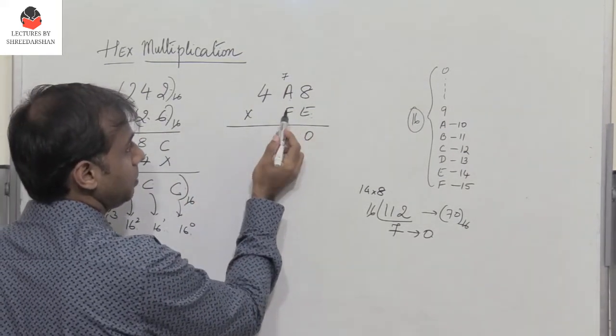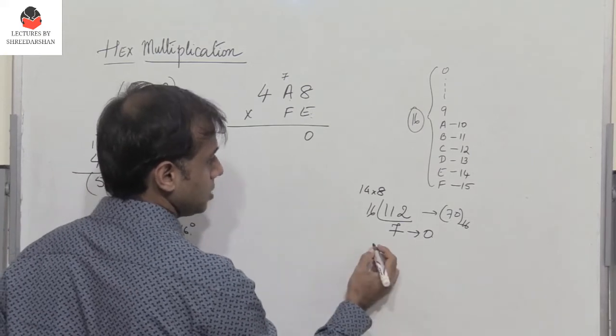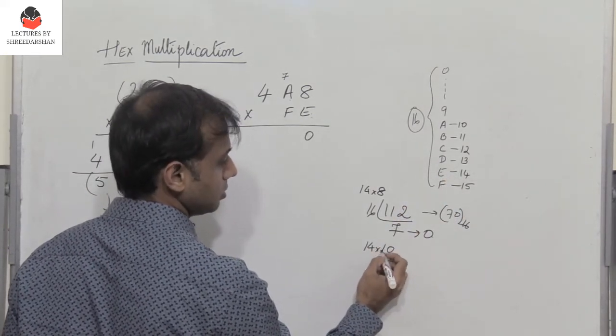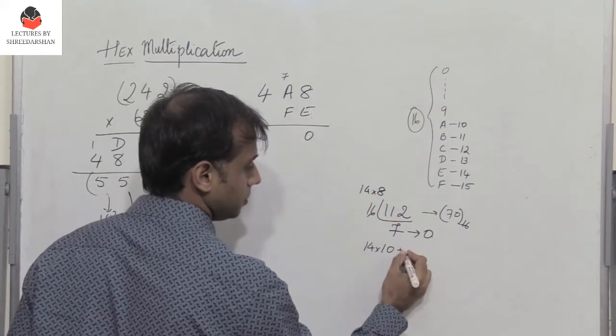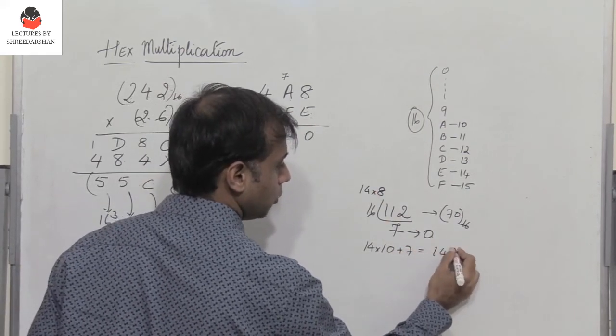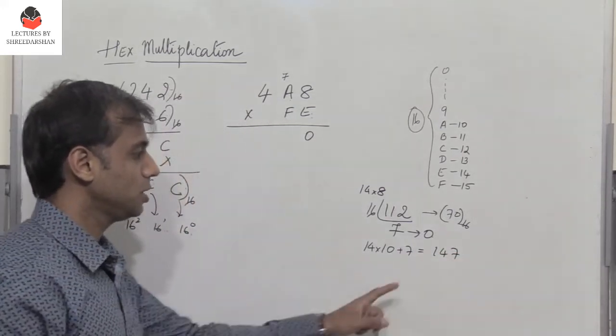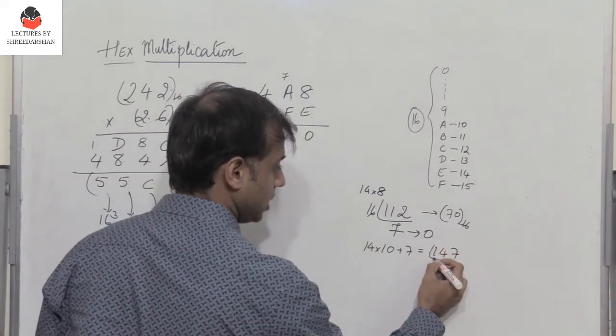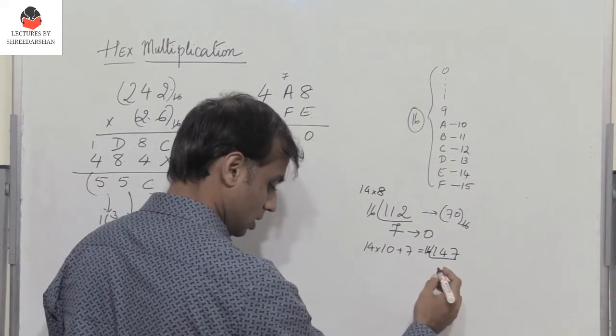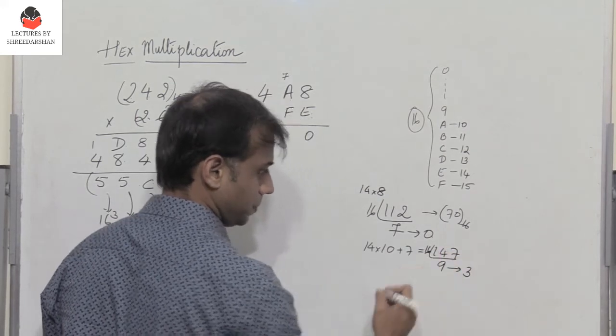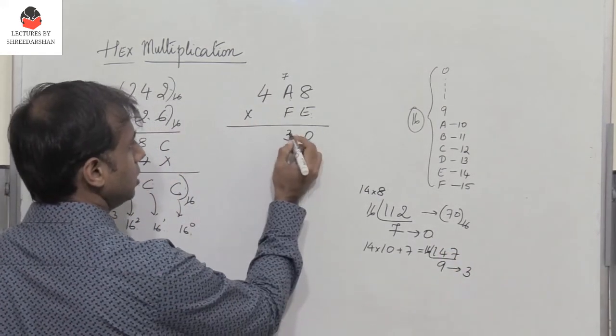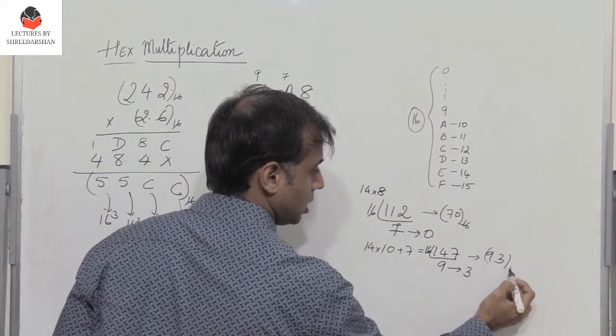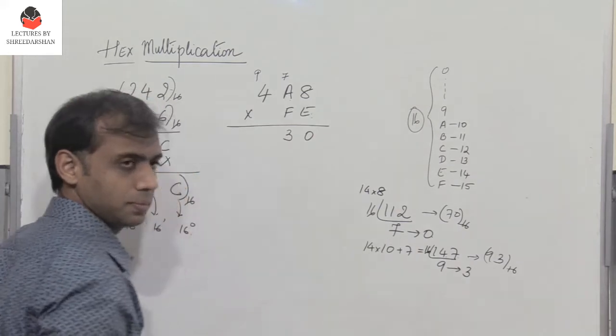So now you have E multiplied with A. So E is 14, A is 10. So you get 140 plus 7. So you have 147. So this 147 has to be converted to hex. So 147 you divide it by 16. So what do you get? You get 9 and 3. So you write 3 with a 9 carry. So 9, 3 is the hex representation of 147.